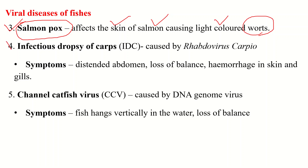The fourth disease is Infectious Dropsy of Carps, or IDC. This disease is caused by an RNA genome virus, that is rhabdovirus, and this virus is about 120 by 60 nm. The affected fish shows a greatly distended abdomen, loss of balance, and hemorrhaging in the skin and gills, due to which the color of the fish becomes darker.